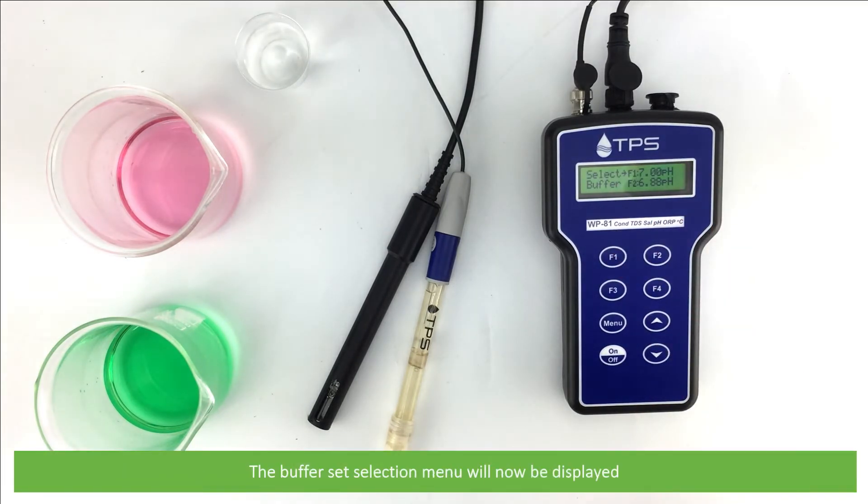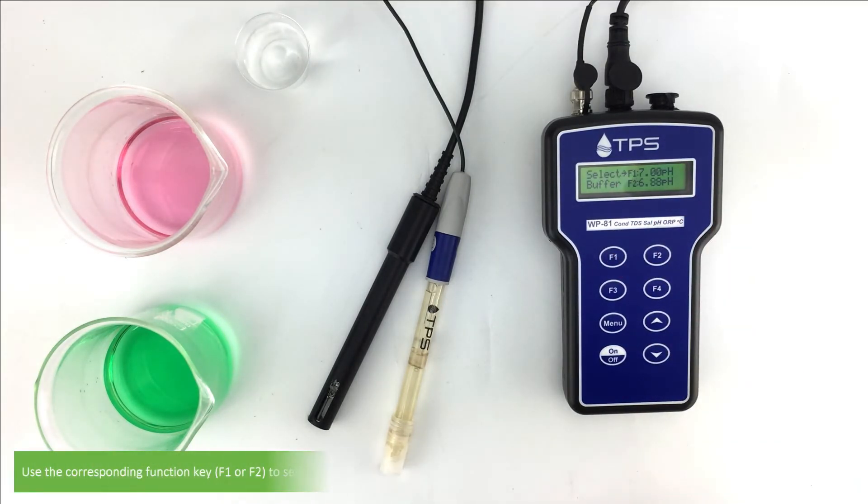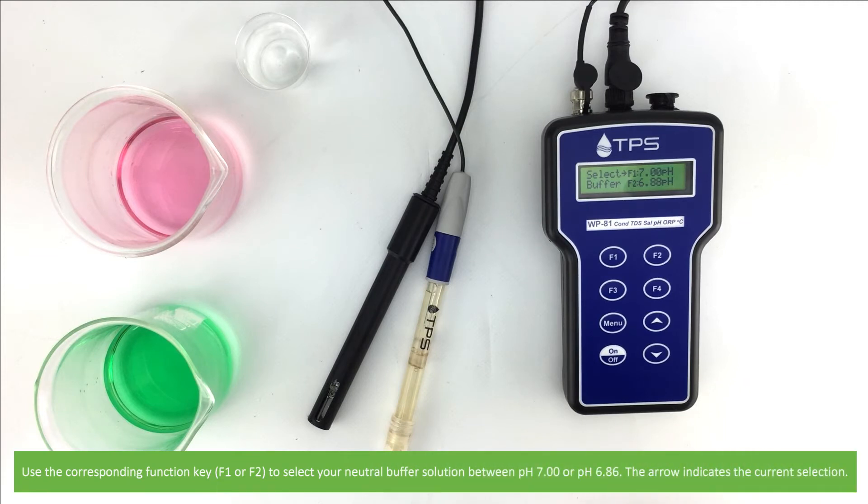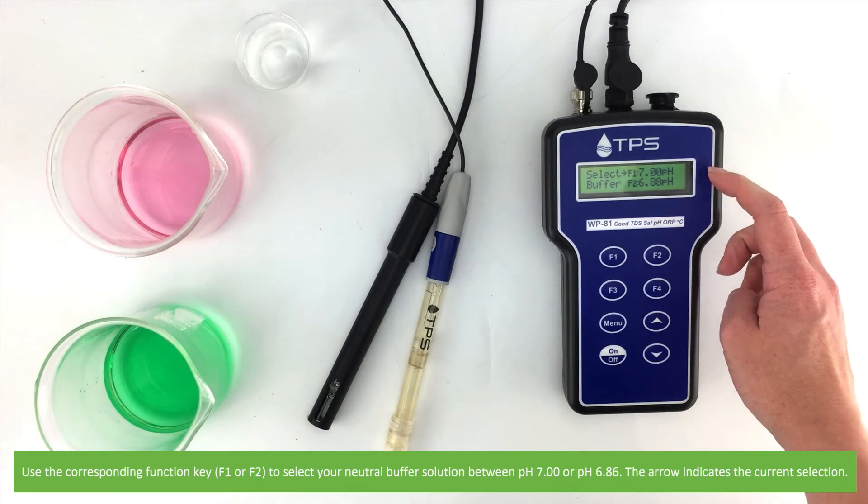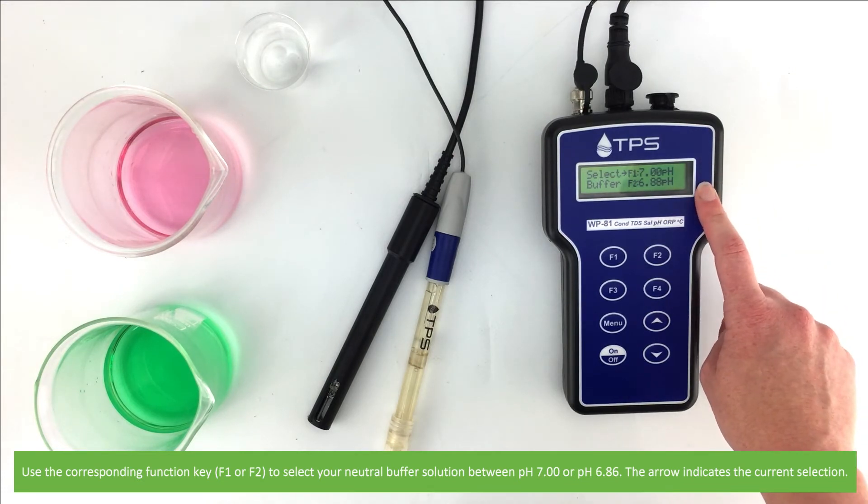The buffer set selection menu will now be displayed. Use the corresponding function key, either F1 or F2, to select your neutral buffer solution between pH 7 or pH 6.86. The arrow indicates the current selection.